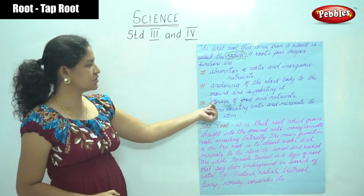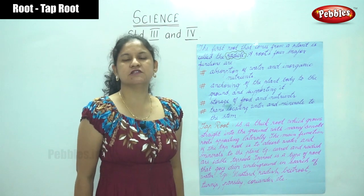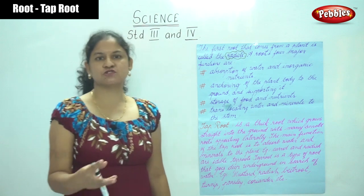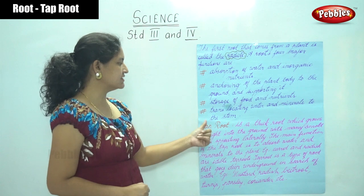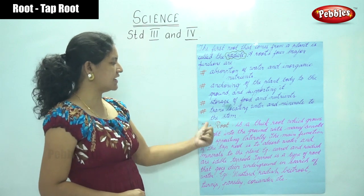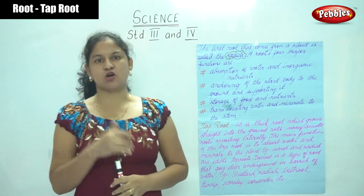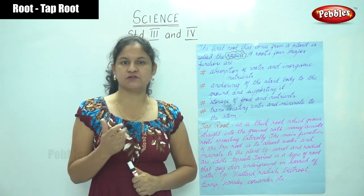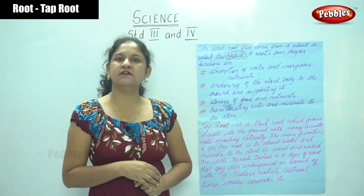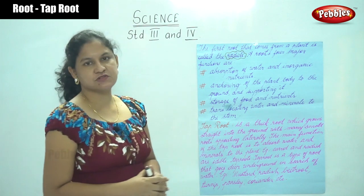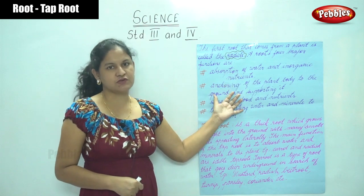The third function is storage of food and nutrients. The fourth function is translocating water and minerals to the stem — that is, providing water and minerals to the stem. So these are the four main functions of the root.